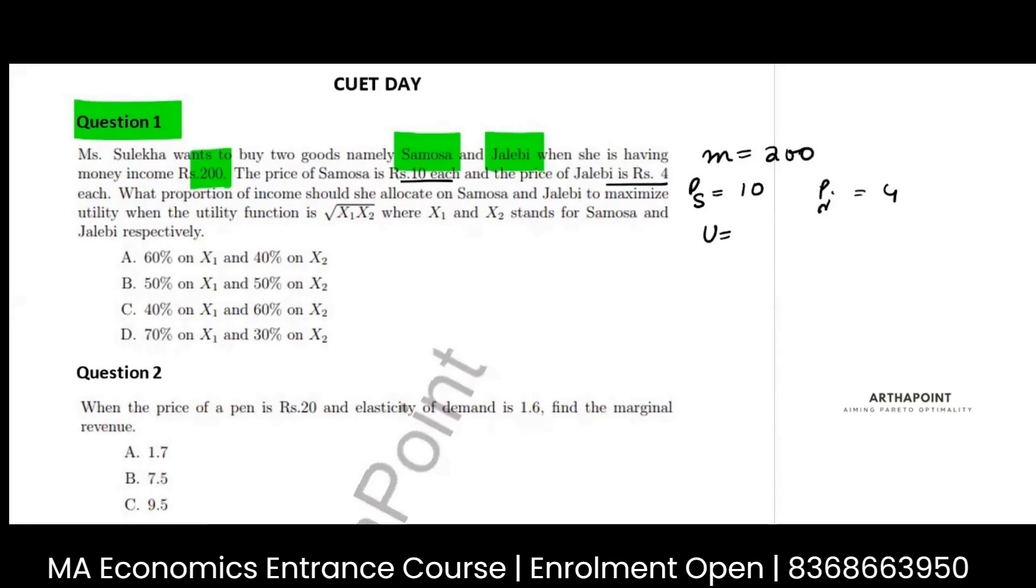Now the trick to solve these kind of questions is that you just look at the power of the Cobb-Douglas function. It is asking what is the proportion of income that we've spent. So whenever your utility function is of the form x1 to the power alpha, x2 to the power beta.